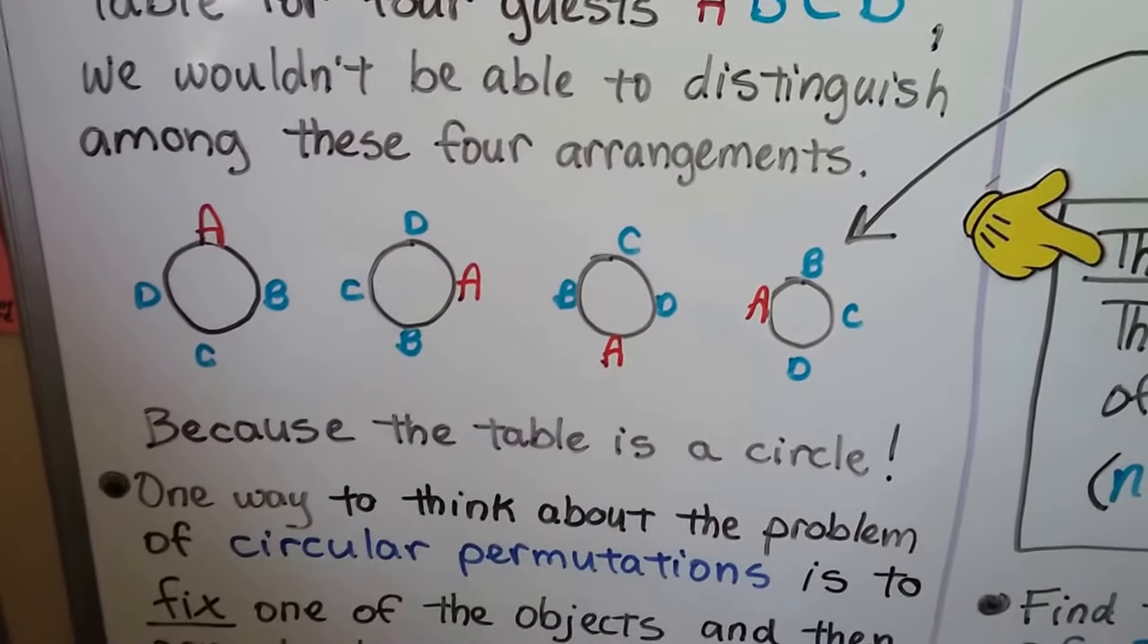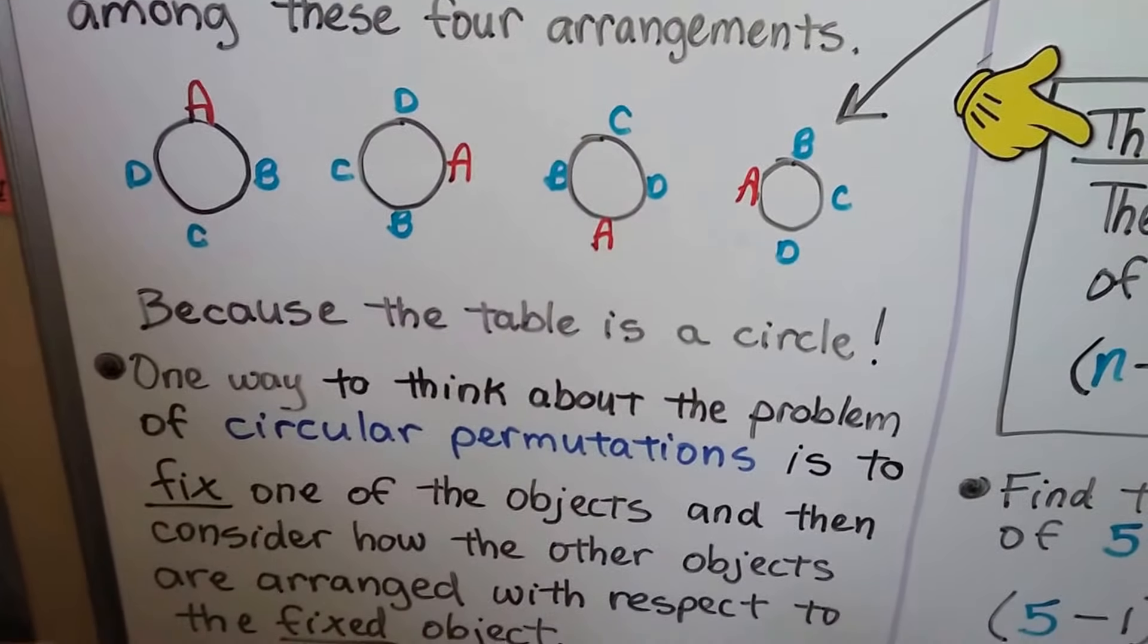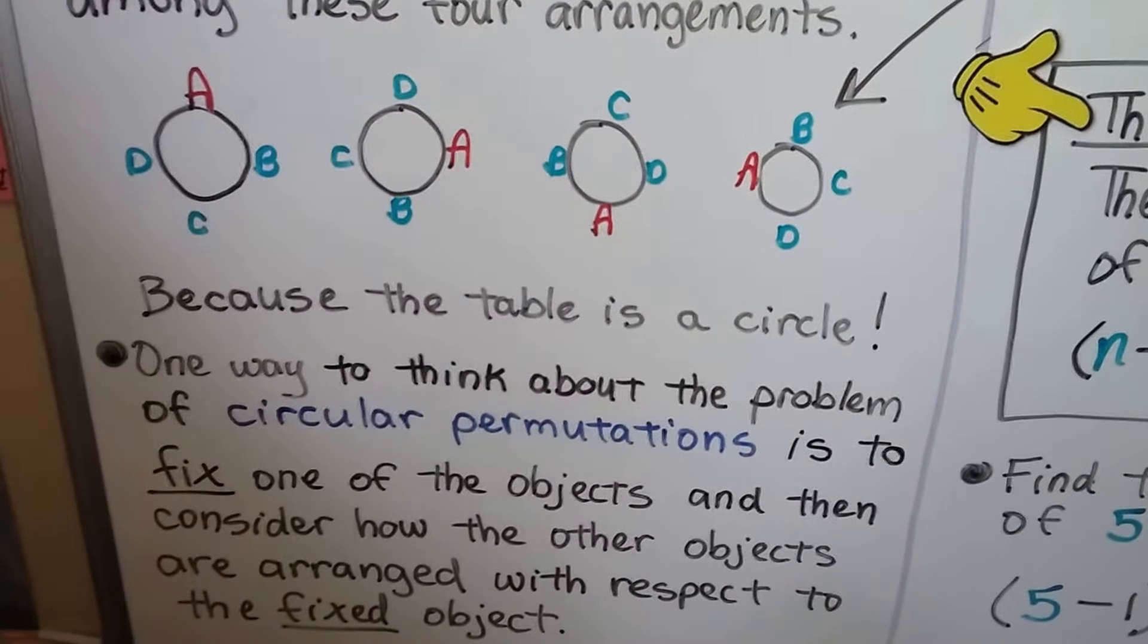One way to think about the problem of circular permutations is to fix one of the objects and then consider how the other objects are arranged with respect to the fixed object.